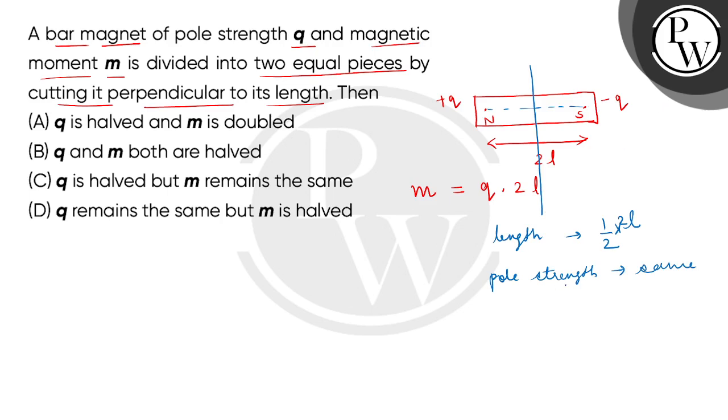So, here we can see that the pole strength is the same, but if we check the magnetic dipole moment, because here magnetic length is half of the magnetic length, so the new magnetic dipole moment will also become half, that is M divided by 2.